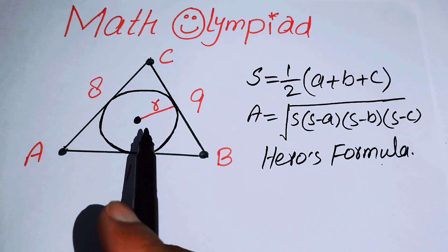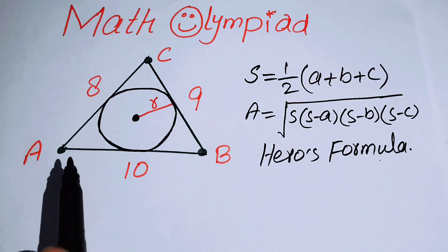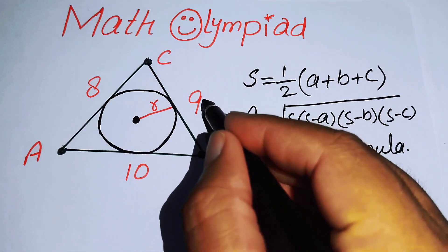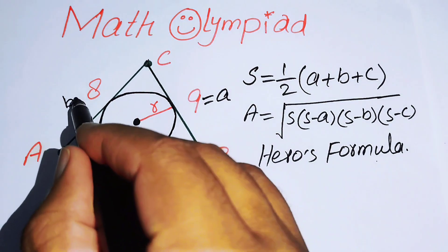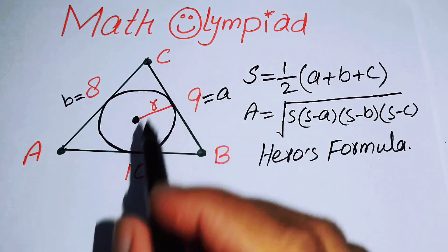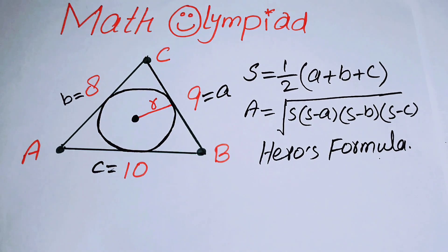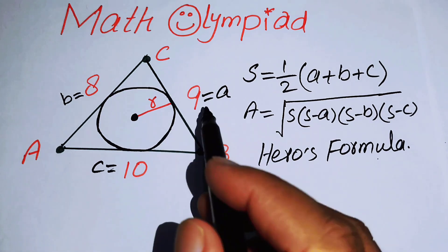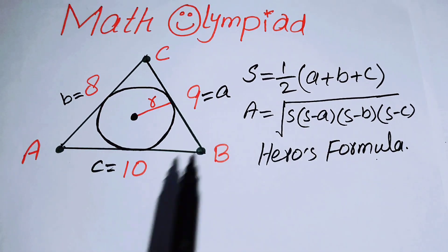We can find the area of triangle ABC and then move towards finding the radius of the circle. Here we have the triangle — the side opposite vertex A is small a, and similarly we name the other sides small b and small c. Now we have the values of a, b, and c.